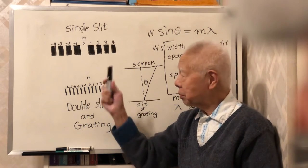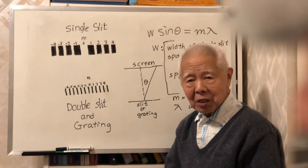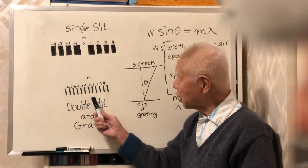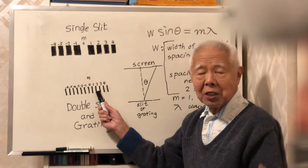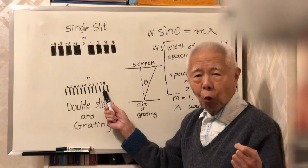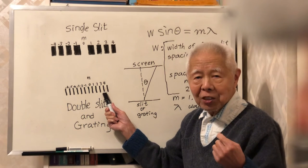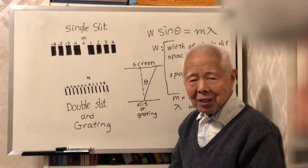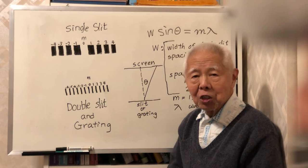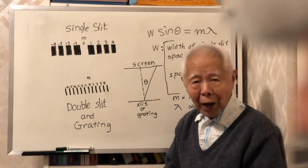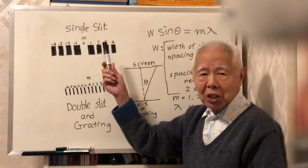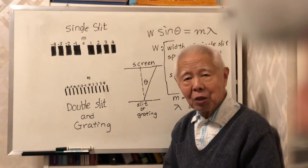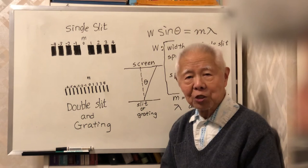However, for double slit experiments or grating, M means something different. M equals 0 is the center bright, and M equals 1 is the first bright fringe on the left or right side. So M means either dark or bright: in single slit diffraction M means dark, while in double slit or grating M means bright.